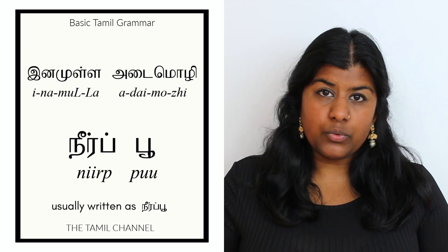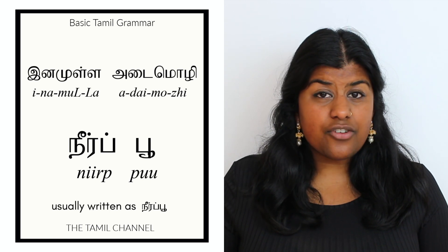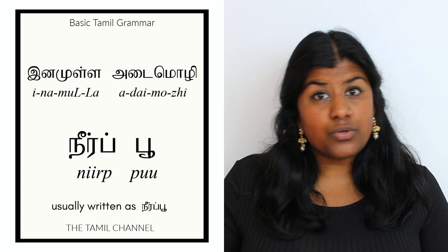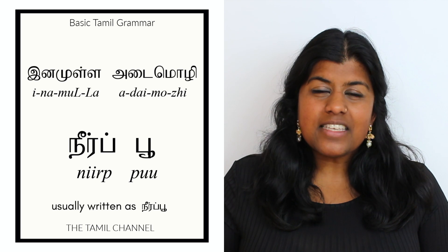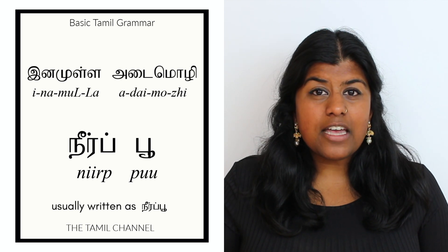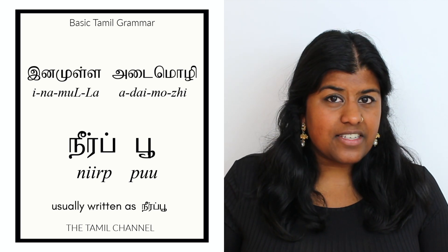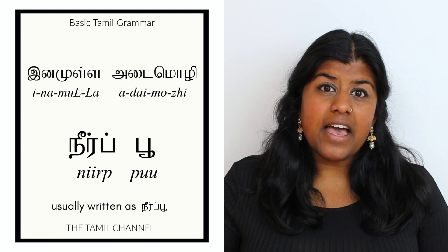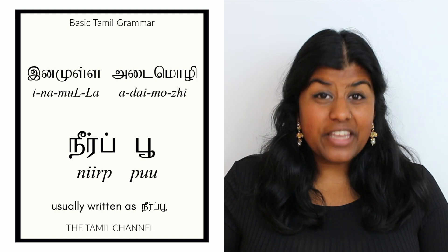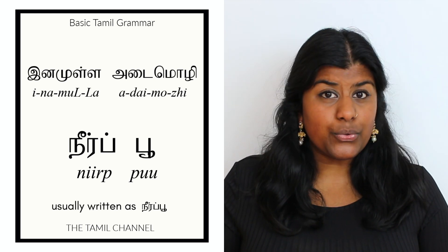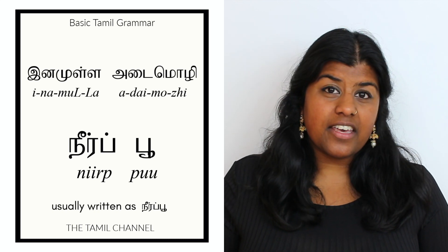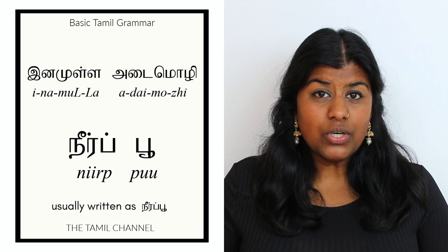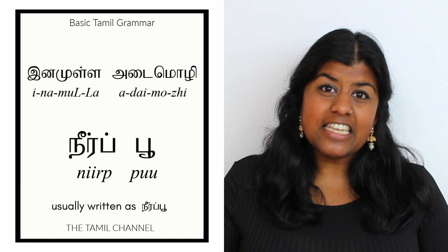Take the word Neerpu. Flowers can grow on land but also on water or in water. So in this case Neer describes the flower and categorizes it into a water flower. So Neer becomes Inamulla adai molly for Pu, essentially modifying the noun Pu as Neerpu.